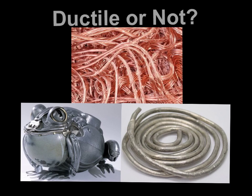Are metals ductile or not? So ductile means made into wire or is easily shaped or molded. Based on these three images, do you think metals are ductile or not? Write it in your notes.